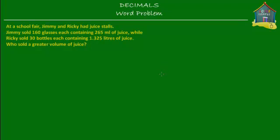Welcome to homecampus.com.sg. Let's solve this word problem. At the school fair, Jimmy and Ricky had juice stalls. Jimmy sold 160 glasses, each containing 265 milliliters of juice, while Ricky sold 30 bottles, each containing 1.325 liters of juice. Who sold a greater volume of juice?